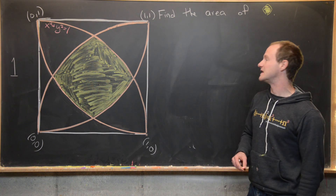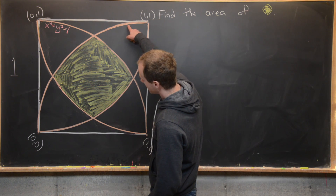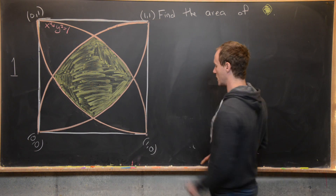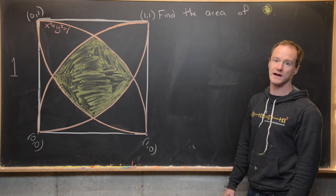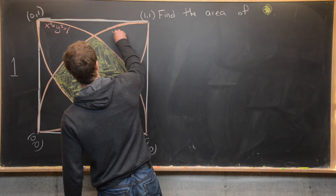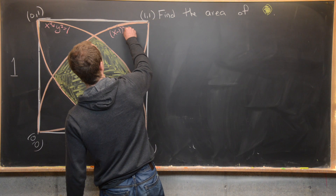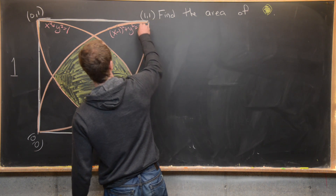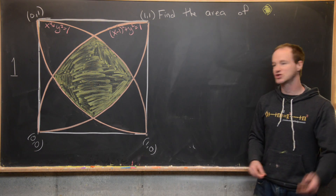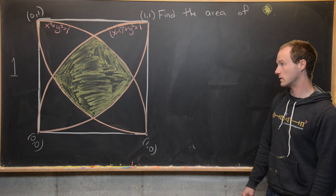Now let's look at another circle. This one goes from the origin to (1, 1) and is centered at (1, 0), so its equation is (x - 1)² + y² = 1, which shifts the center to the point (1, 0).